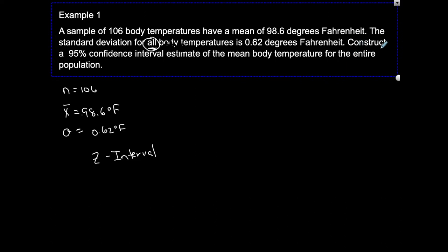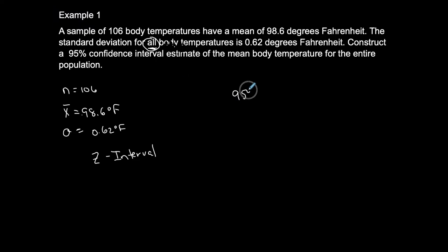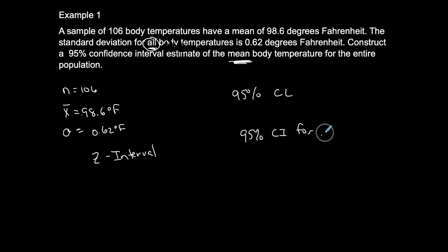We are going to construct a 95% confidence interval estimate of the mean body temperature — a 95% confidence interval for mu. So we have n, we have x-bar, and we have sigma. We're going to use Z-interval.